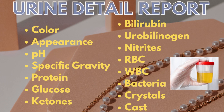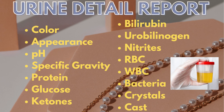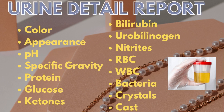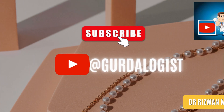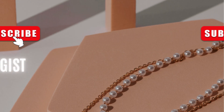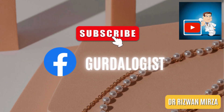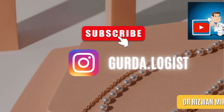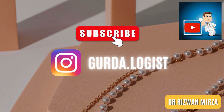There are different components or characteristics mentioned in Urine DR that help us establish diagnosis along with other relevant investigations, including color, appearance, pH, specific gravity, protein, glucose, ketones, bilirubin, urobilinogen, nitrites, RBC, WBC, bacteria, crystals, and urinary cast. Let's discuss them briefly to know their pattern in normal urine and how their pattern guides us in making a diagnosis.